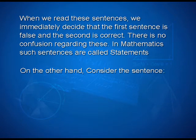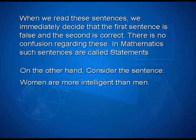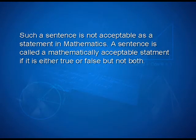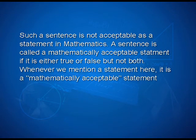On the other hand, consider the sentence: women are more intelligent than men. Some people may think it is true while others may disagree. Regarding this sentence, we cannot say whether it is always true or false. That means this sentence is ambiguous. Such a sentence is not acceptable as a statement in mathematics. A sentence is called a mathematically acceptable statement if it is either true or false, but not both. Whenever we mention a statement here, it is a mathematically acceptable statement.